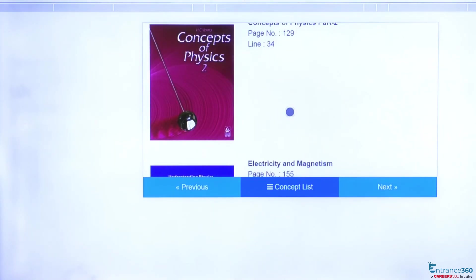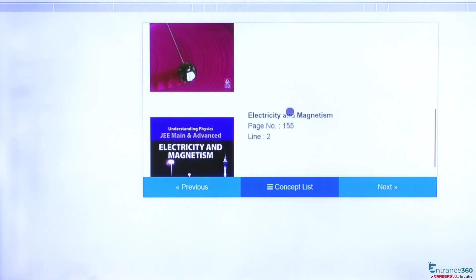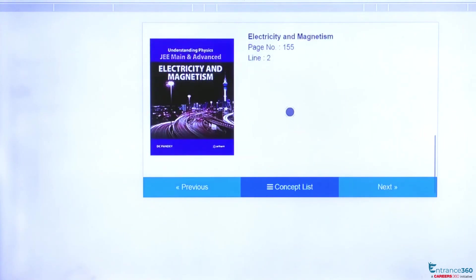H.C. Verma, page number 129, line number 34. Electricity and Magnetism by D.C. Pandey, page number 155, line number 2.